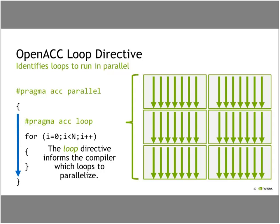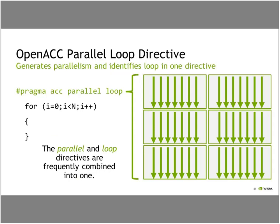Note that parallel and loop are so often used together that we have a shorthand: ACC parallel loop. That combines the whole operation into one — it generates the parallelism as parallel gangs and identifies the loop to parallelize, all in one step.